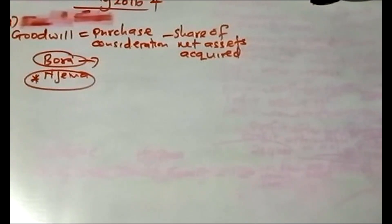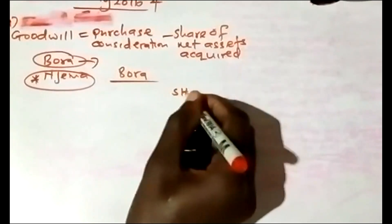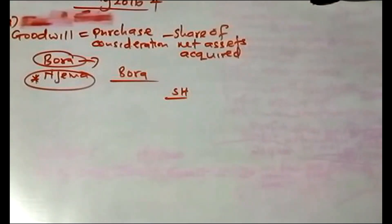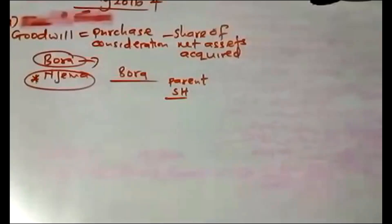In some scenarios where they are not specific, you need to think about which method to use to compute the goodwill of the subsidiary. In this question, they specifically said to use the partial method. To use the full method, you must be given the fair value of the non-controlling interest. Under the partial method, goodwill is attributable to the parent only.